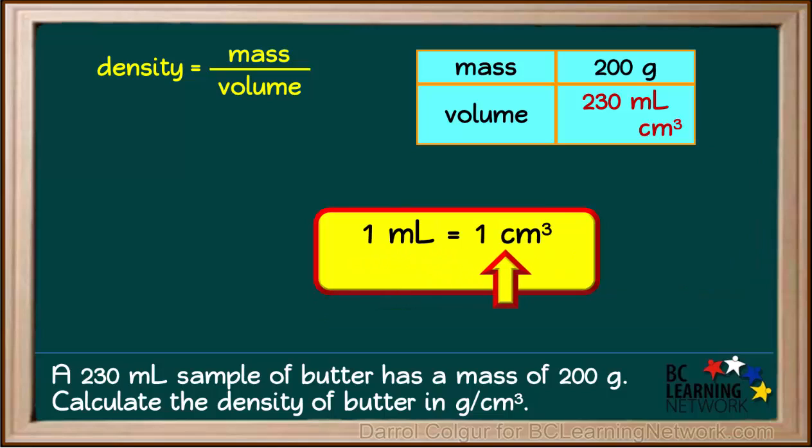It is known that 1 mL is the same as 1 cubic centimeter. So 230 mL is the same as 230 cubic centimeters. And we can now put 230 in for the volume in cubic centimeters.